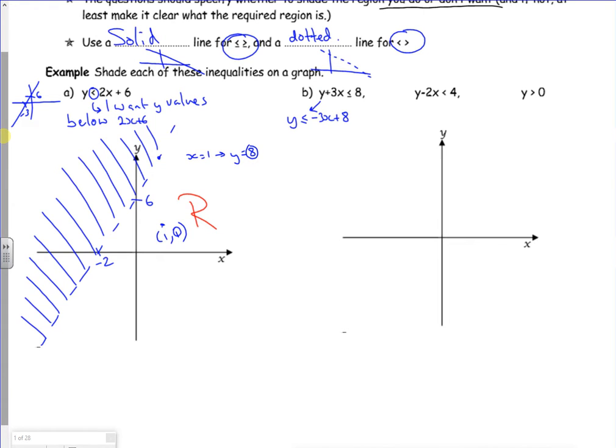Right. So it's less than or equal to, so I know it's a solid line, minus 3x plus 8. If you graphed it, it would look like that. It would cross at 8 and it would cross at 8 over 3. Yeah, 8 over 3.